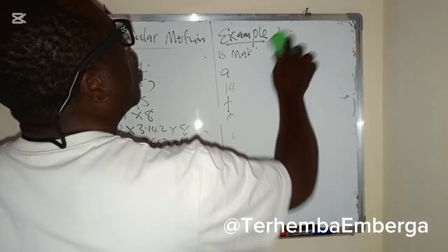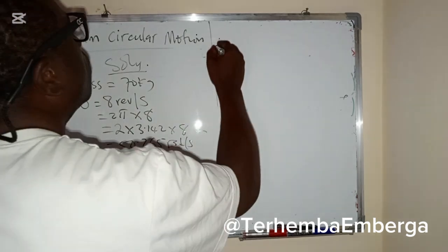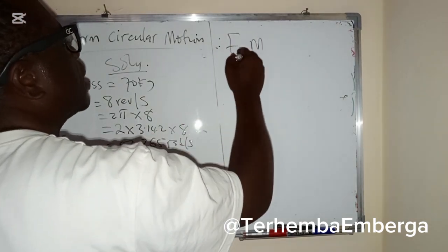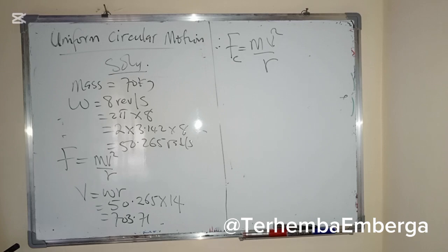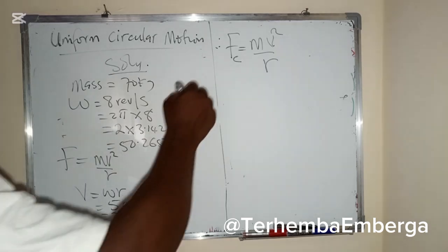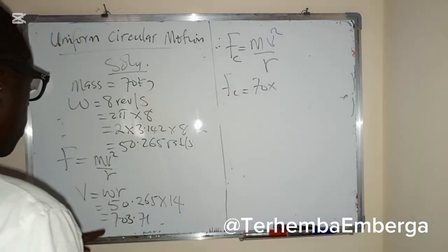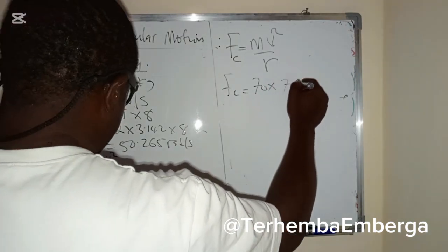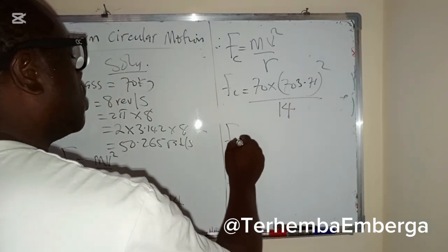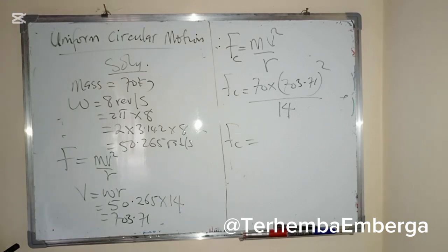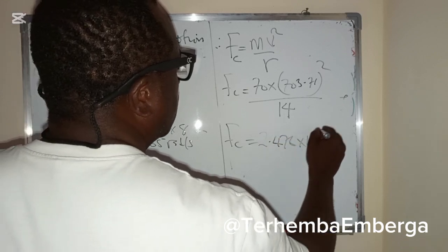We can now calculate the centripetal force. FC equals mv² over R. The mass is 70 kg, v is 703.71, and R is 14. Substituting: FC equals 70 times 703.71 squared divided by 14. Evaluating that gives us 2.476 times 10 to the power of 6 Newtons.